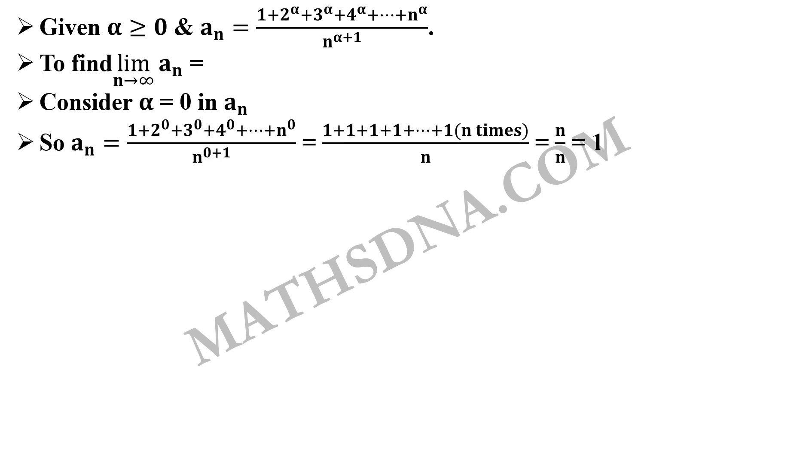Here we firstly consider alpha equals to 0 in our given a_n. So a_n becomes 1 plus 2 raised to 0 plus 3 raised to 0 up to n raised to 0 upon n raised to 0 plus 1. Now in the numerator we already know that any number raised to 0 equals to 1. So the numerator is 1 plus 1 plus 1 plus 1 up to n times and the denominator is n, that is n upon n, which equals to 1.